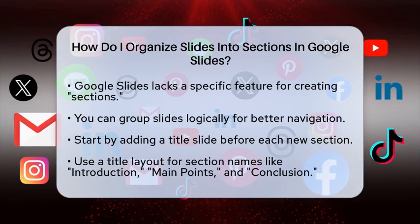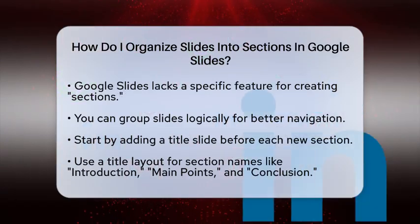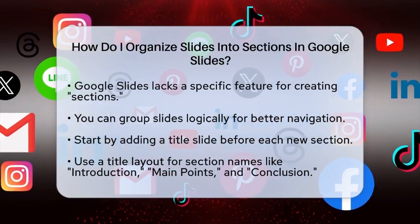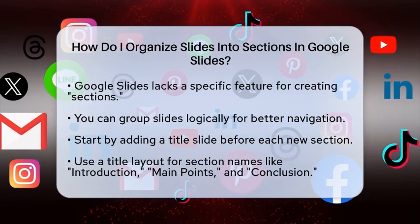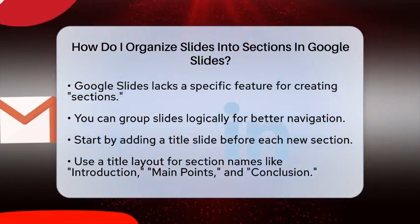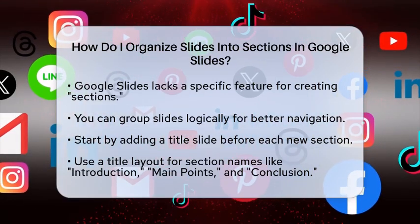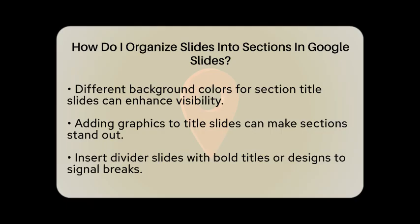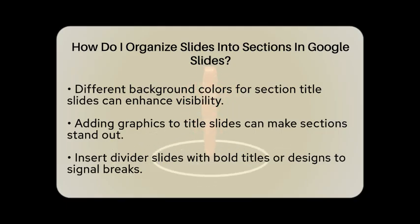One simple way to start is by adding a title slide before each new section. To do this, insert a new slide, select a title layout, and type in the name of your section. For example, you might label your slides as introduction, main points, and conclusion. This method provides clear visual breaks between different topics.